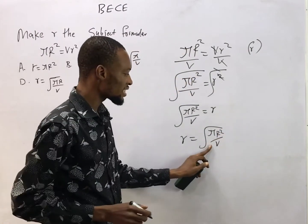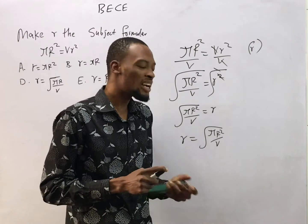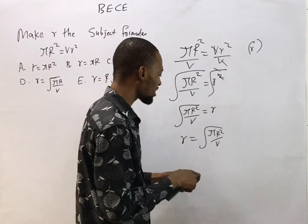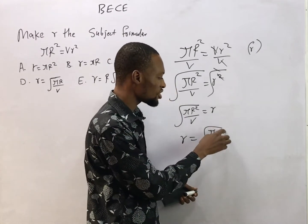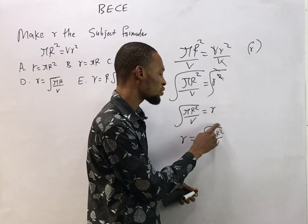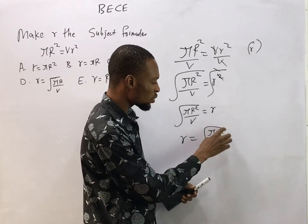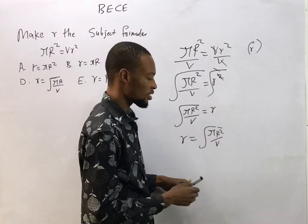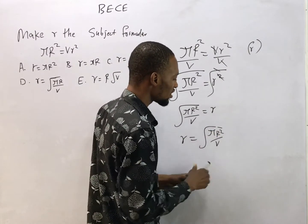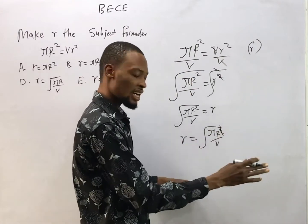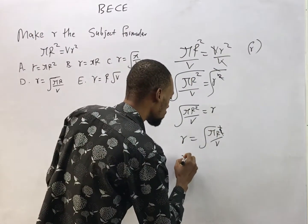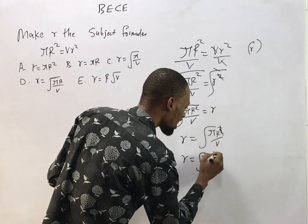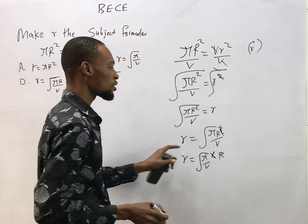If you look at this: r is squared on the right side, and we're taking the square root of that side. This means the square root can remove the square from r, so that the square root is broken away from r. The square cancels the square root, leaving r alone.